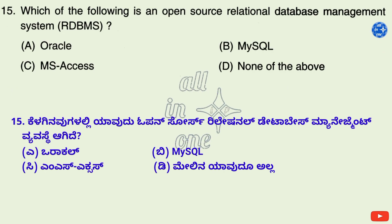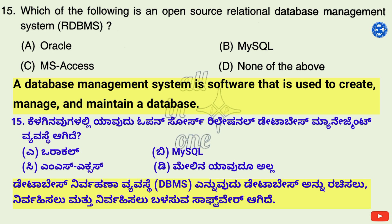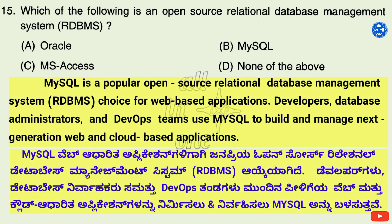Question 15. Which of the following is an open source relational database management system? Options: A. Oracle, B. MySQL, C. MS Access, D. None of the above. MySQL is a popular open source relational database management system choice for web-based applications. Developers, database administrators, and DevOps teams use MySQL to build and manage next-generation web and cloud-based applications. Therefore, right answer is B: MySQL.